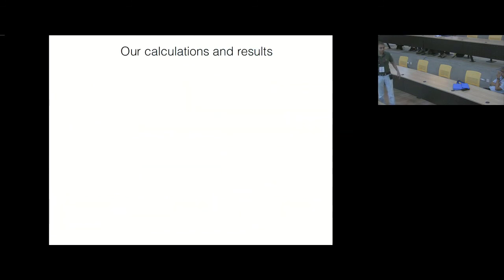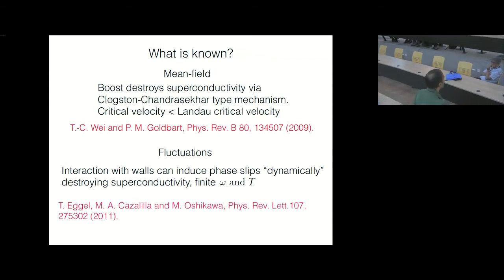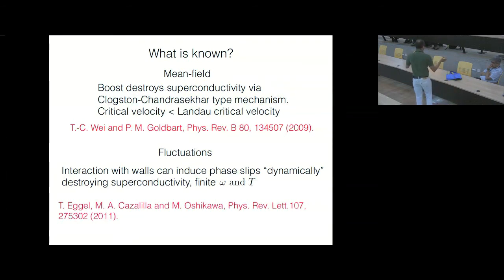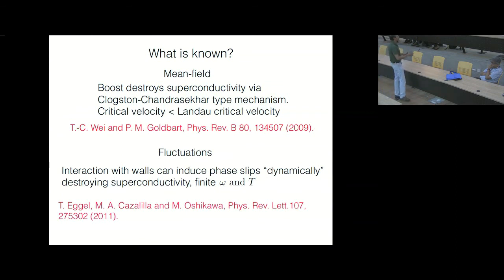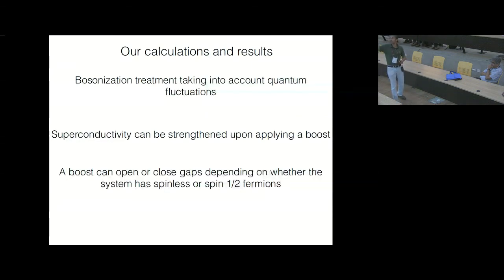What we have done is in the spirit of that second calculation, but we have not talked about walls — we have thought about a superconductor which exists in the presence of a lattice. This is a stationary lattice, and then you have the electrons which pair up to give this algebraically long-range superconductor in one dimension. So the momentum non-conserving obstacle in our calculation is the lattice.